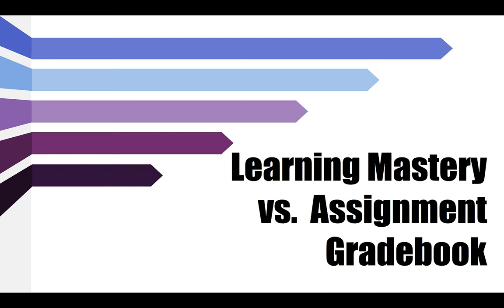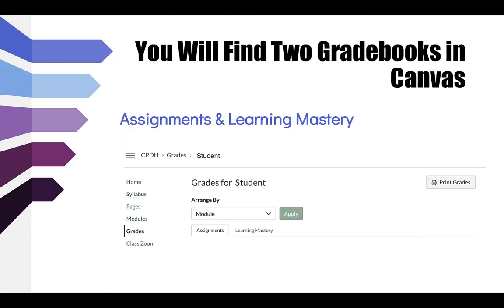If you're in a class that's using standards-based grading in Canvas, you are going to see something that might look a little bit different than what you're used to. There are going to be two different grade books in Canvas — one is called Assignments and one is called Learning Mastery.